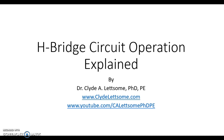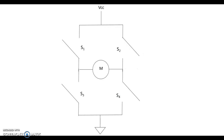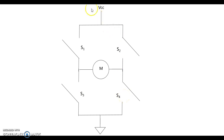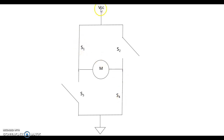To start, we're going to talk first about the basic setup of an H-bridge circuit. For an H-bridge circuit, typically we have four switching circuits: S1, S2, S3, and S4, all connected to VCC and ground as shown here. In the middle we typically have some sort of load — in this case, a motor.